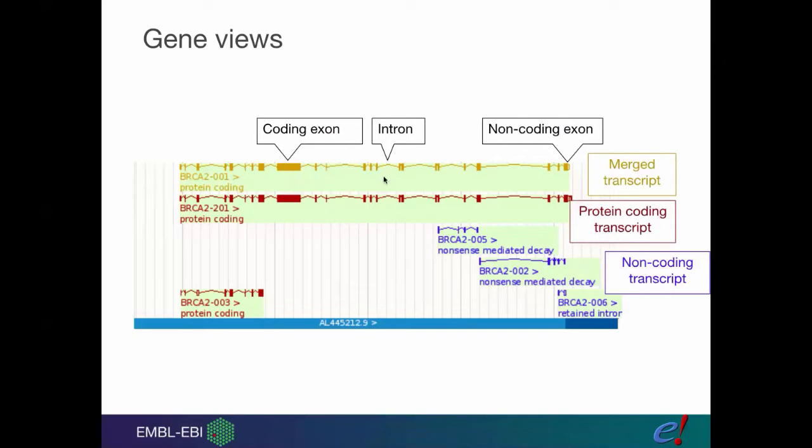The gold ones are what we call the merged transcripts. These are essentially transcripts where two different methods of annotation have produced them and agreed on where the transcript is. The red ones are protein coding but only discovered by one method. Even though this is a protein coding gene, it does have three non-coding transcripts which we can see in blue.